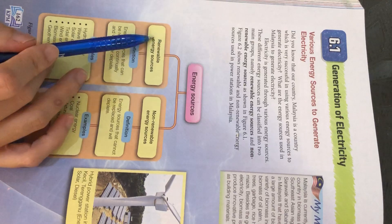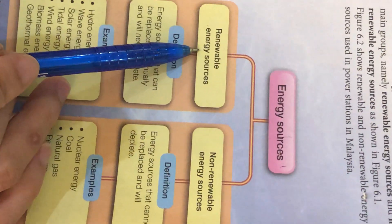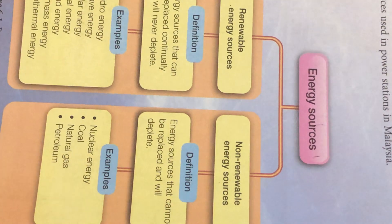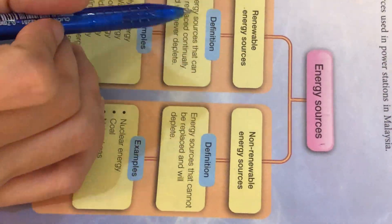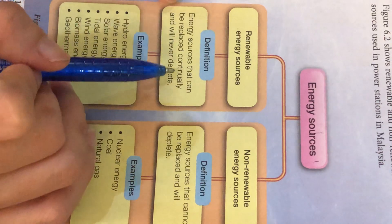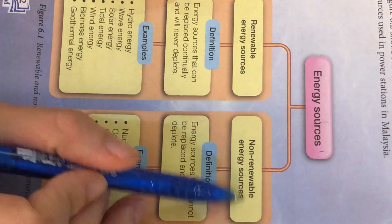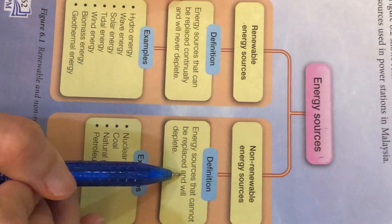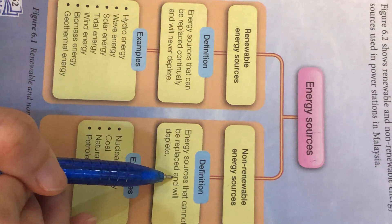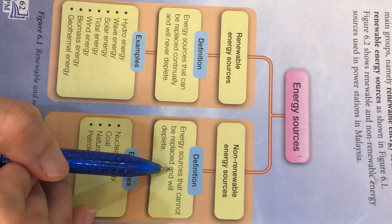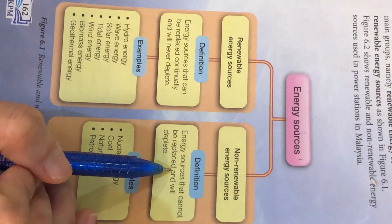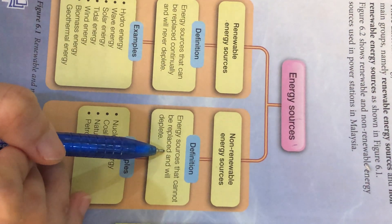So the first thing you have to know, we have two types of energy. We call one renewable energy, and another one we call non-renewable energy. The key word for renewable energy is energy that can be replaced continuously. Non-renewable energy means it cannot be replaced in a short time, like petroleum — it only forms after millions of years, so we cannot get a replacement in shorter time.